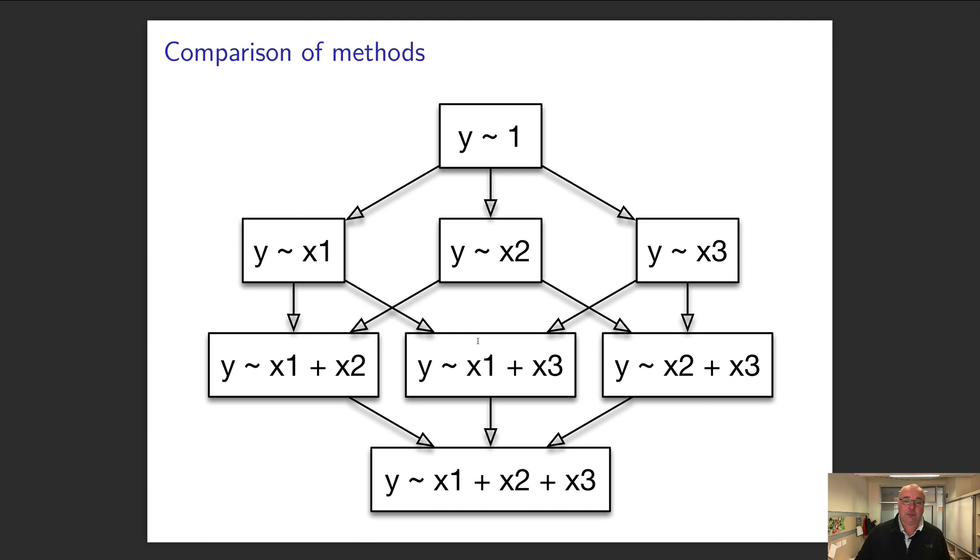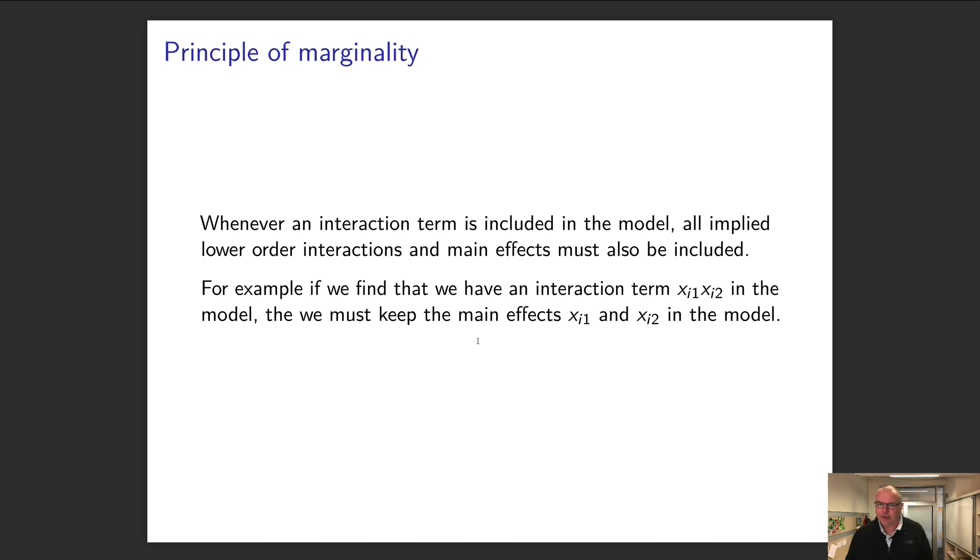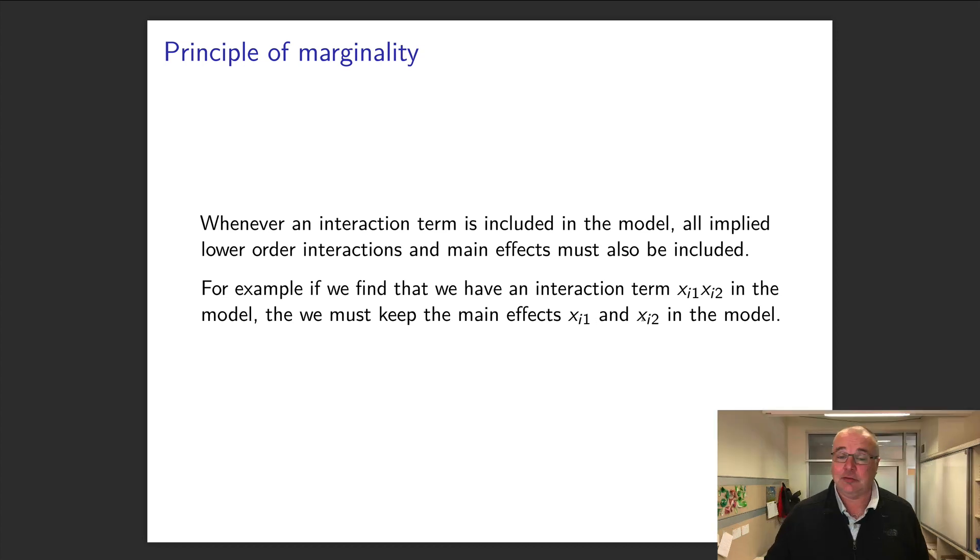When we're exploring these models, we should maintain what we call the principle of marginality. The general version is: if I have an interaction term in my model, then any of the terms that form this interaction must be included. So if I have an interaction term involving x_i1 and x_i2 in my model, I should always have x_i1 and x_i2 as main effects. Even if they're not significant, keep them in the model. We'll see that again. That's it, see you next time.